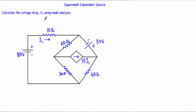We have to find out the voltage drop V3 using mesh analysis. As the circuit contains a current source, we have to apply super mesh analysis. For voltage V3, this terminal will be positive and this terminal will be negative, and the voltage dropped across this 40 ohm will be our V3.